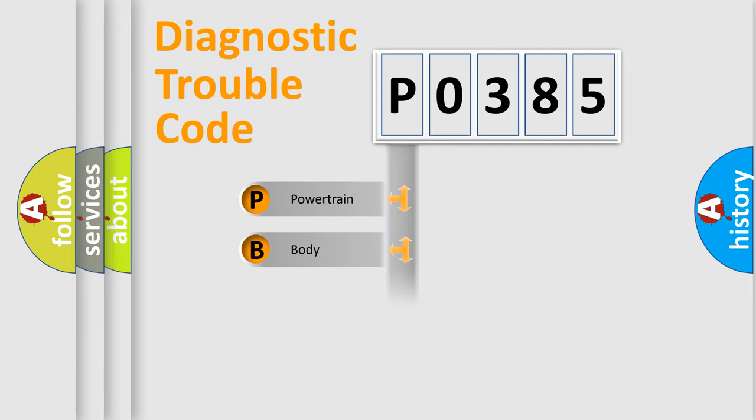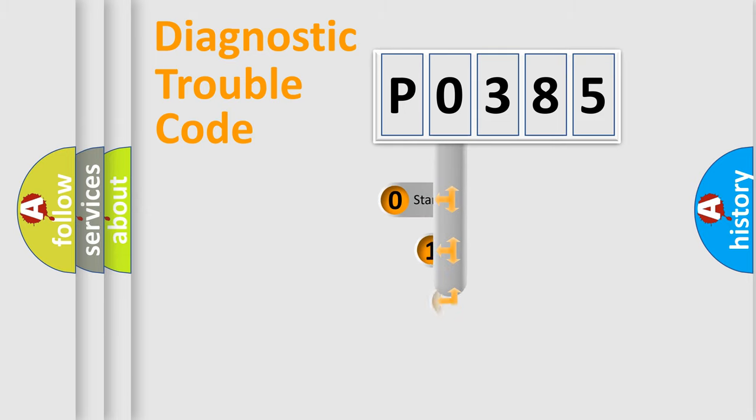Powertrain, body, chassis, network. This distribution is defined in the first character code.